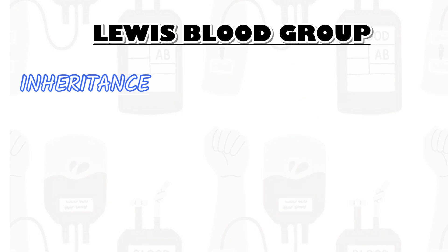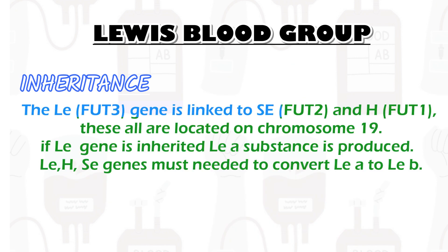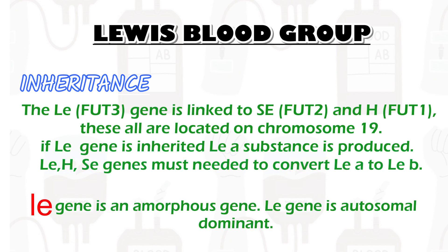Inheritance. The LE (FUT3) gene is linked to SE (FUT2) and H (FUT1). These are all located on chromosome 19. If the LE gene is inherited, Le-a substance is produced. Both H and SE genes are needed to convert Le-a to Le-b. The LE gene is an amorphous gene and is autosomal dominant.